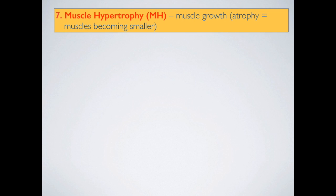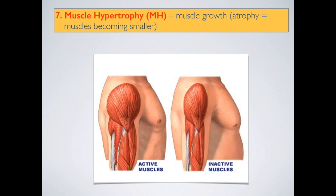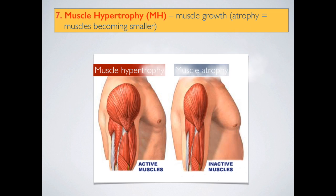Muscle hypertrophy will occur when muscles are active, but particularly when training applies the principle of progressive overload. If we progressively overload our muscles — constantly lifting a little bit heavier each resistance training session — muscles will gradually increase in size. If we don't train, or we stop training, or we don't challenge those muscles, that will lead to muscle atrophy.